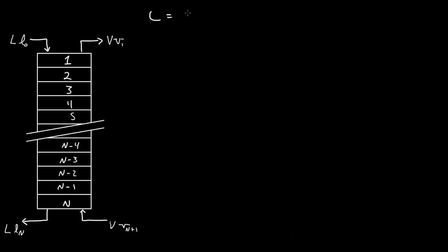L is the total liquid and V is the total vapor. L0 is going to be the amount of liquid that is the contaminant.